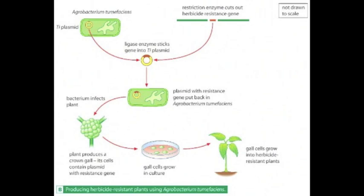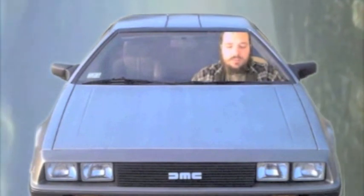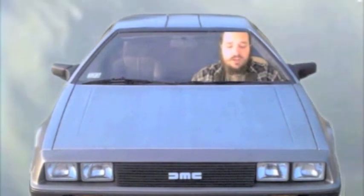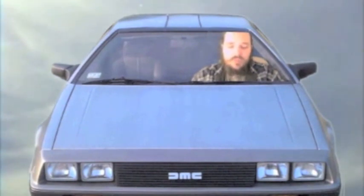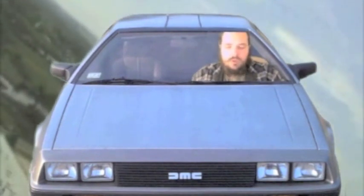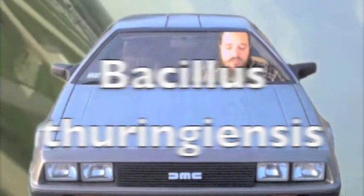Worldwide, insects may eat or damage more than 30 percent of the crops grown each year. Different insecticides — substances which kill insects — are sprayed onto crops to protect them from insect attack. However, insecticides are costly and harmful to wildlife and humans. The bacterium Bacillus thuringiensis kills leaf-eating caterpillars and the larvae of flies and mosquitoes.